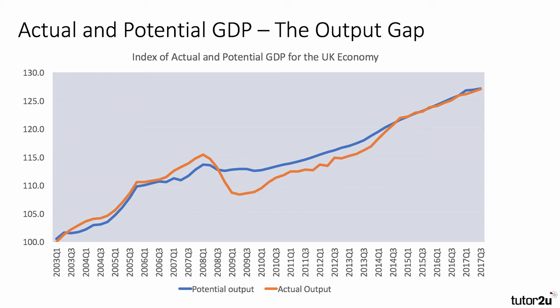A negative output gap suggests that the British economy is operating below potential output and has some spare capacity — some idle economic resource. For example, unemployment might be quite high or firms might be operating below full capacity. In that situation, there's often pressure for prices and wages to remain low, and for inflation to fall.